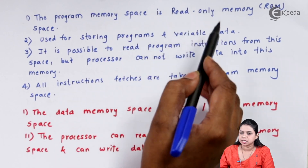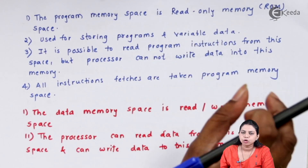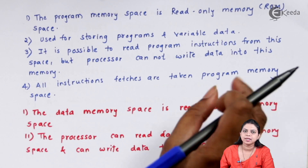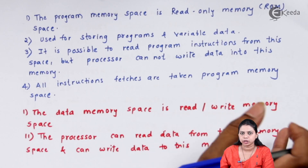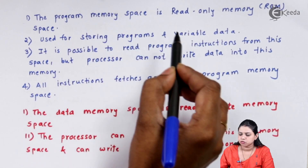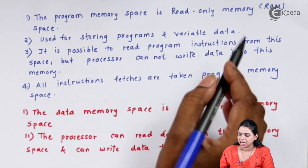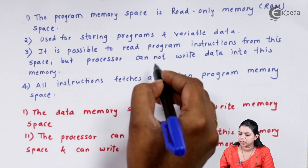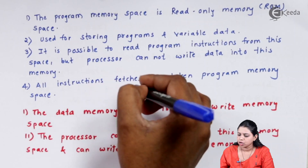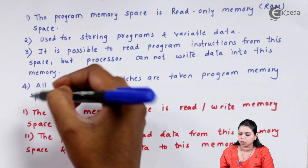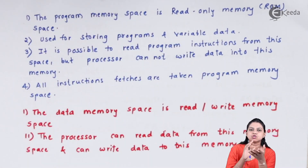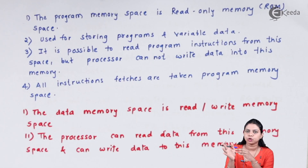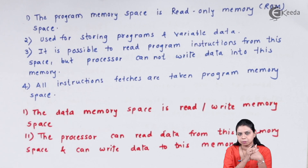The program memory space is a read-only memory space, meaning you can only read from it — you cannot write into it. It is used for storing programs and variable data. You can read a program instruction, but you cannot write data into this memory. All instruction fetches are taken from the program memory space.